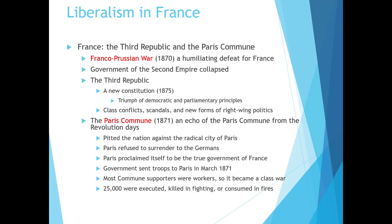The Paris Commune was similar to the revolutionary communes — it pitted the entire nation of France against the radical part of Paris. Parisians refused to surrender to the Germans during the Franco-Prussian War and proclaimed Paris to be the true government of France. The government sent troops into Paris in March 1871 to settle the issue. Most commune supporters were workers, so it became a class war. About 25,000 people were executed, killed in fighting, or consumed in fires they themselves had set.